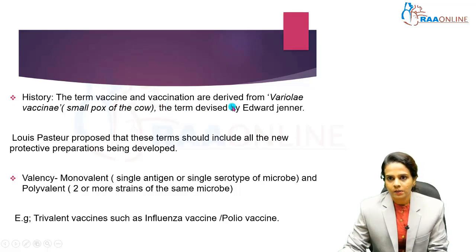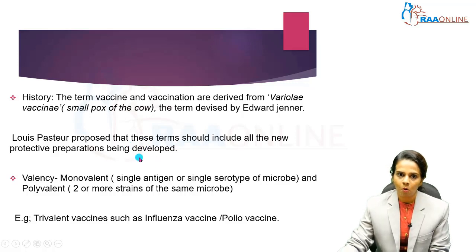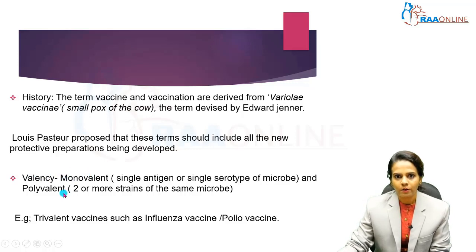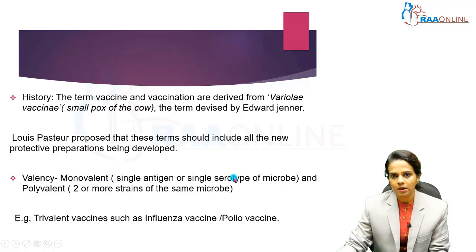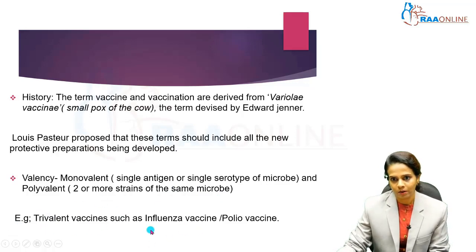The terms vaccine and vaccination are derived from 'variola vaccinae,' that is smallpox of the cow, a term devised by Edward Jenner. Louis Pasteur proposed that these terms should include all the new protective preparations being developed. Based on valency, vaccines are divided into monovalent and polyvalent. Monovalent contains a single antigen or single serotype of a microbe, whereas in polyvalent vaccines, two or more strains of the same microbe are added. For example, trivalent vaccines are commercially available for influenza virus and polio virus infections.